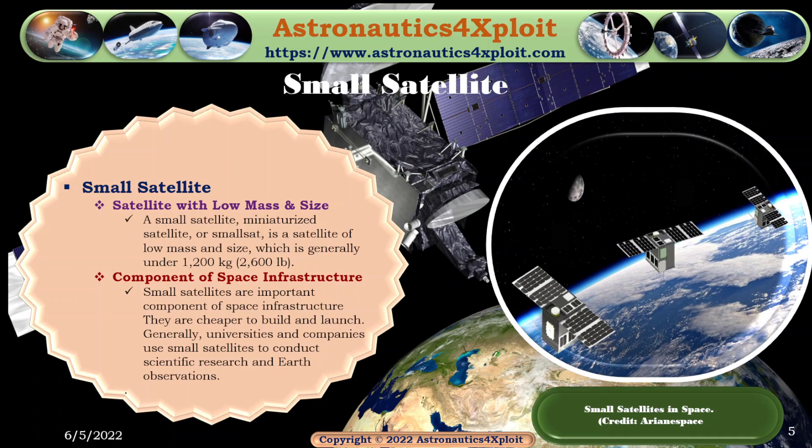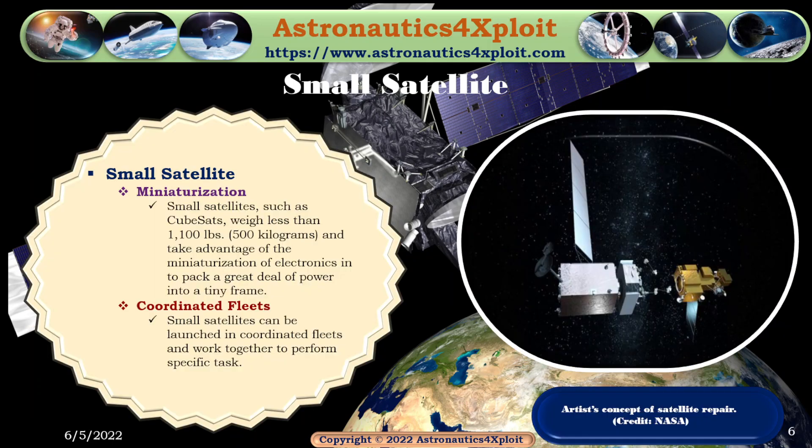A small satellite, also called a miniaturized satellite, is a satellite of low mass and size, generally under 1,200 kilograms. Small satellites are an important component of space infrastructure. They are cheaper to build and launch, and generally universities and companies use small satellites to conduct scientific research and Earth observations. Small satellites such as CubeSats weigh less than 1,100 pounds and take advantage of the miniaturization of electronics to pack a great deal of capability into a small frame.